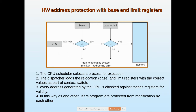For memory protection, the CPU generates a logical address. The base register holds where the process starts and the limit register holds where it ends. Every address generated by the CPU is checked: first whether it is above the base address, then whether base plus the address is less than the limit. Only if both conditions are satisfied does the actual execution of that process take place.